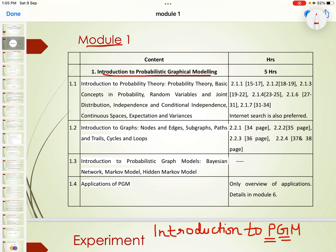Introduction to graphs covers nodes and edges, subgraphs, paths and trails, and cycles and loops. Then you have models — that is, Bayesian networks, Markov models, hidden Markov models — and applications in probabilistic graphical models.